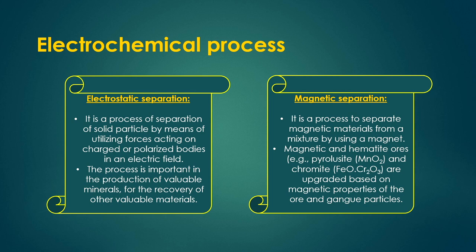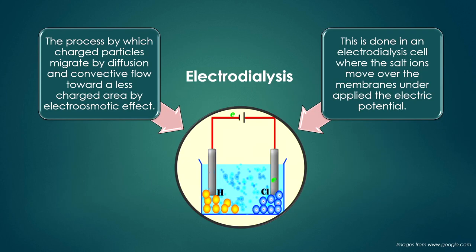Electrochemical processes include electrostatic separation and magnetic separation, by which magnetic and non-magnetic materials are separated from a mixture. Electromagnetic or magnetic separation can separate non-magnetic materials from magnetic ones.